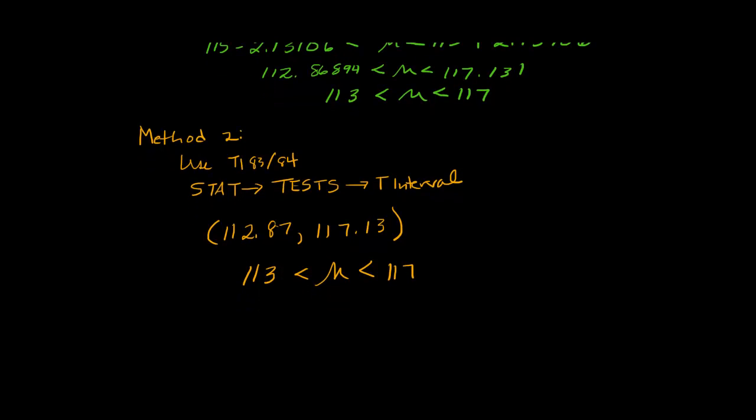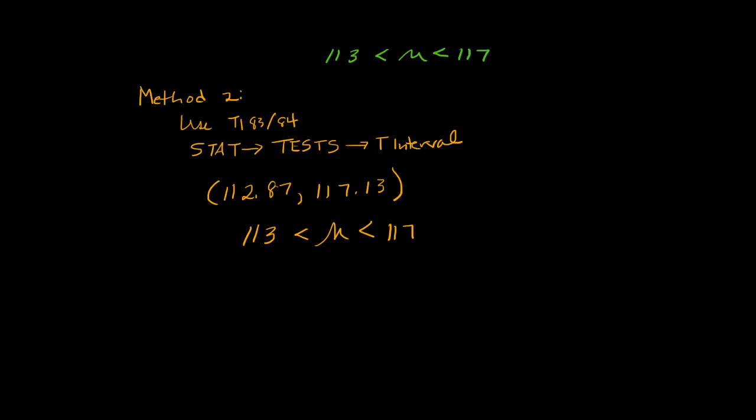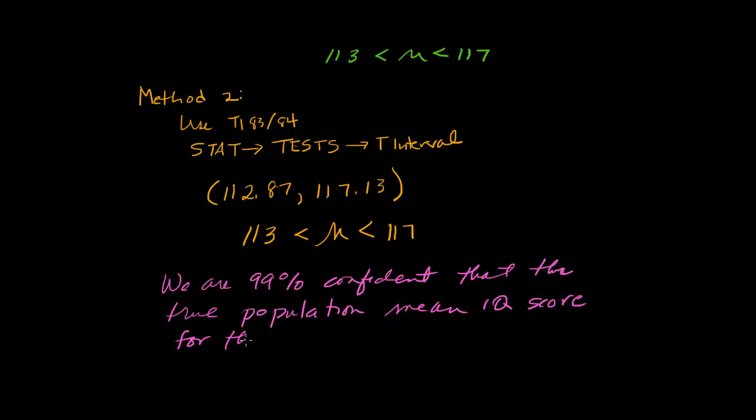Now, it doesn't matter which method you use, you still need to write your interpretation. We are 99% confident that the true population mean IQ score for the students is between 113 and 117.